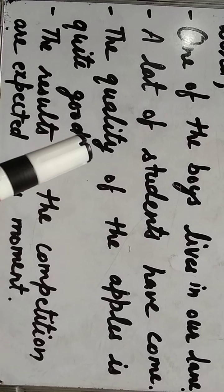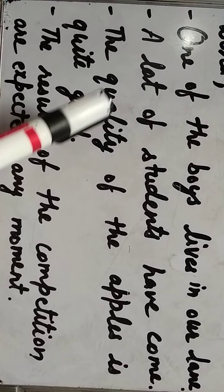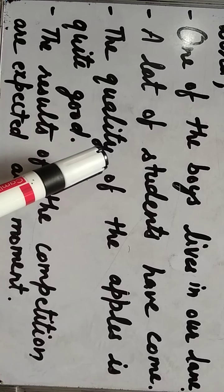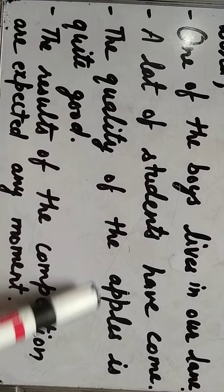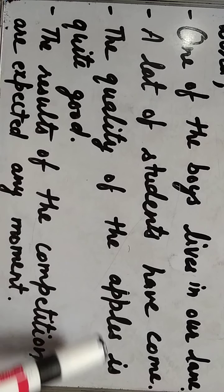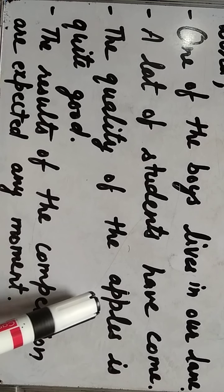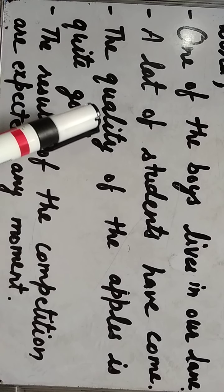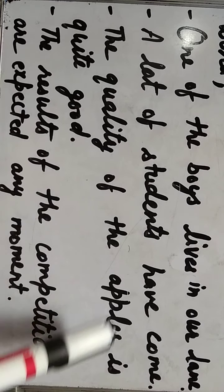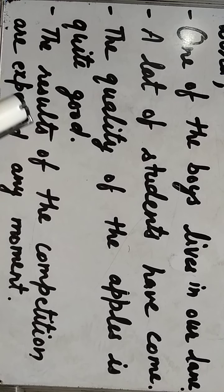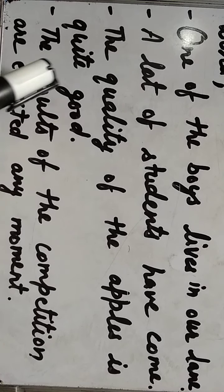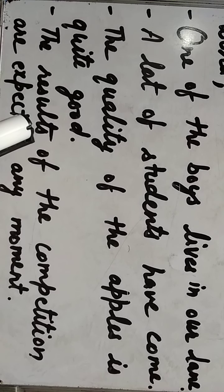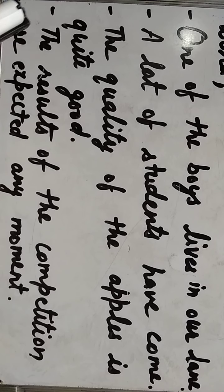'The quality of apples is quite good.' 'of' से पहले 'quality' है जो singular है, इसलिए singular verb 'is' use होगी। Apples plural है पर हम उसे नहीं देखेंगे। 'The results of the competition are expected any moment.' यहाँ 'of' से पहले 'results' है जो plural है, इसलिए plural verb 'are' use होगी।